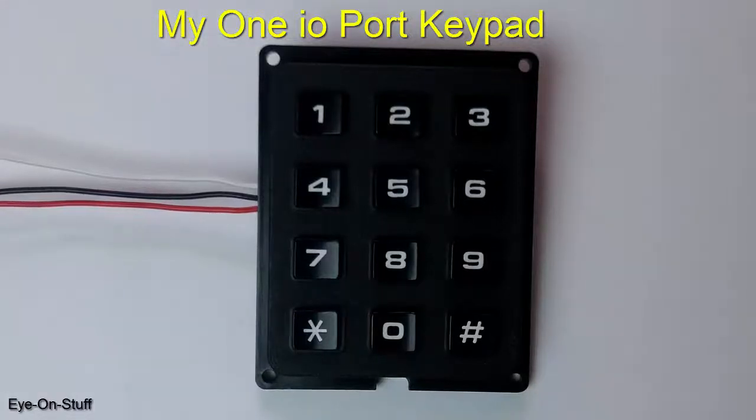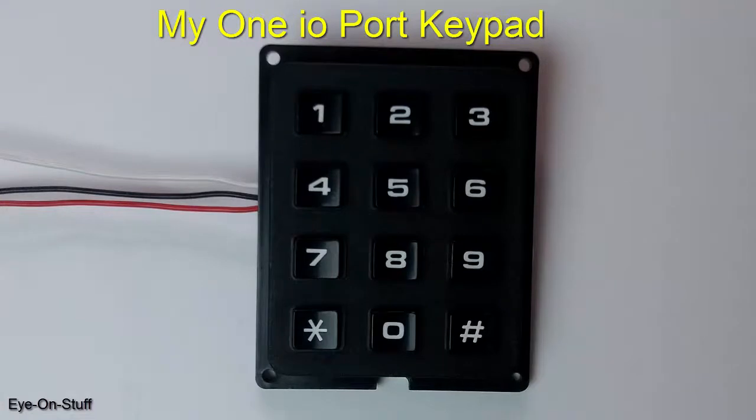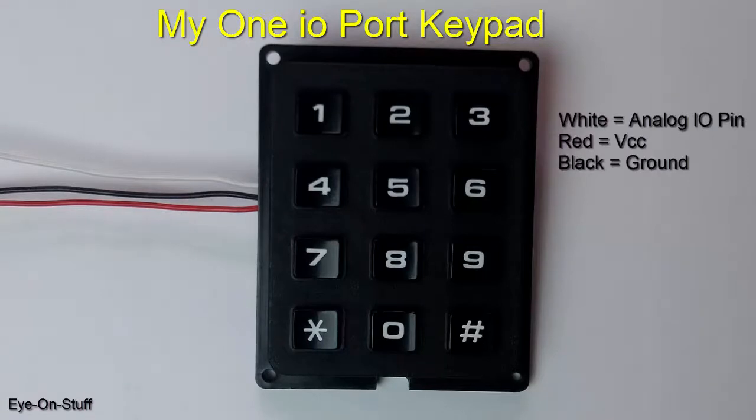In this video we're looking at my 12 button keypad that I modified so it only uses one I/O pin. As you can see it has three wires. Two of the wires are for 5 volts VCC and ground, and the white wire is for an I/O pin.